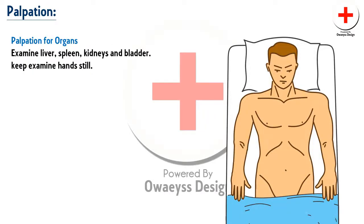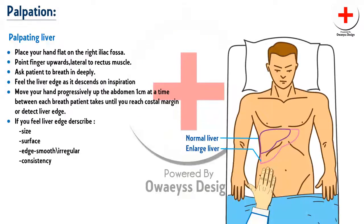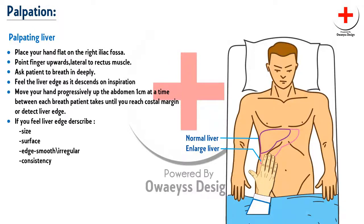Organs to palpate include the liver, spleen, kidneys, bladder, and aorta. While palpating the liver, place your hand flat on the right iliac fossa with fingers pointing upwards, lateral to the rectus muscle. Ask the patient to breathe in deeply. Feel the liver edge as it descends on inspiration. Move your hand progressively up the abdomen one centimetre at a time between each breath until you reach the costal margin or detect the liver edge. If you feel the liver edge, describe its size, surface, edge — whether smooth or irregular — and consistency.